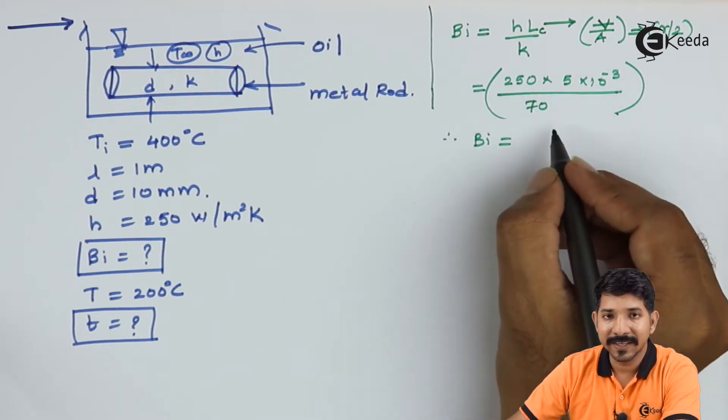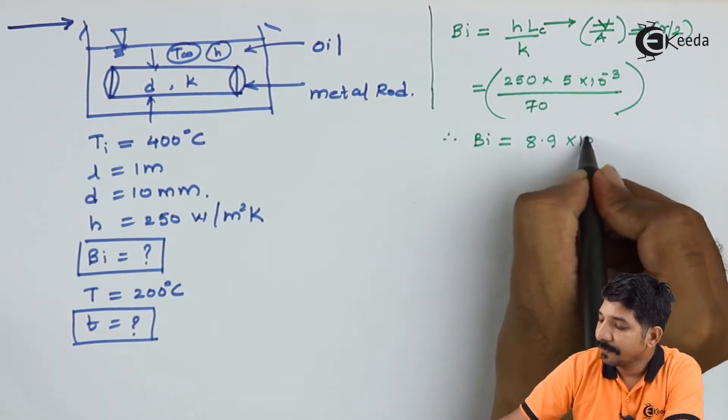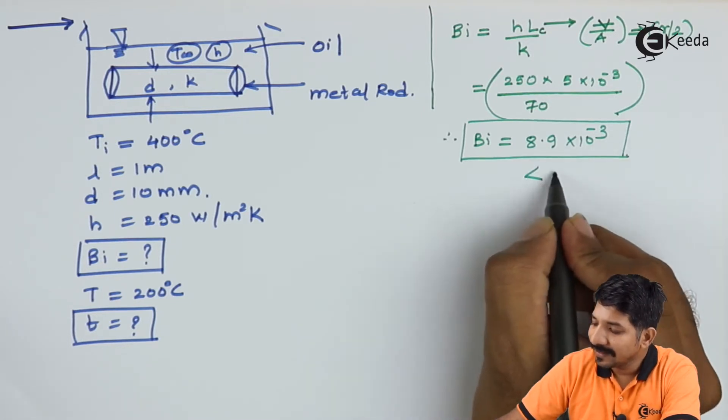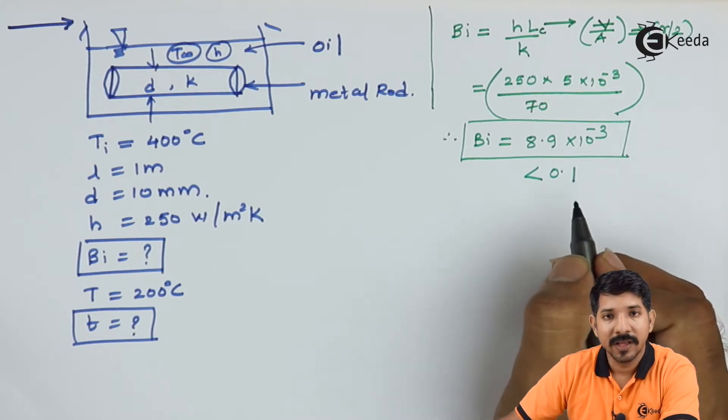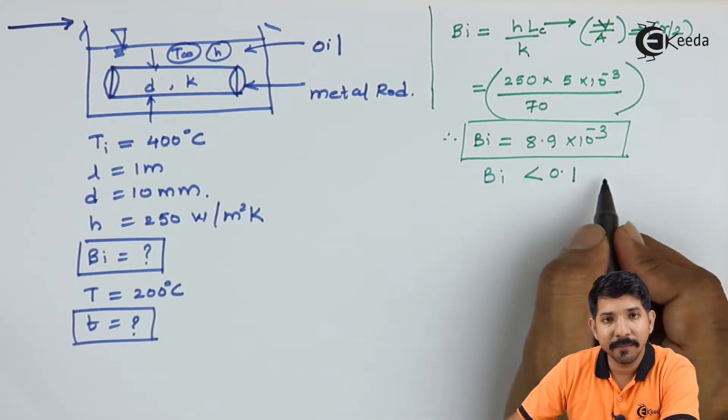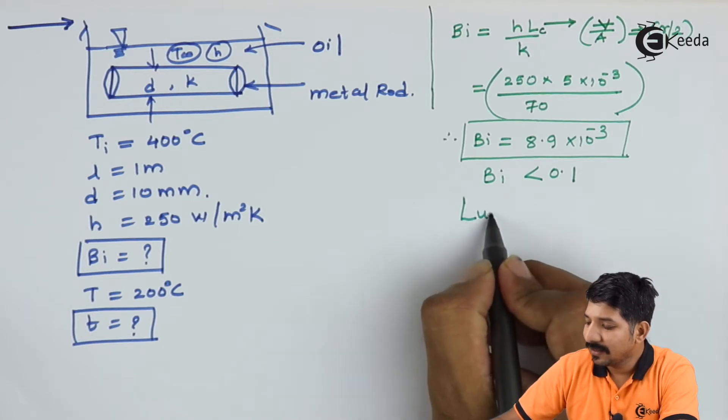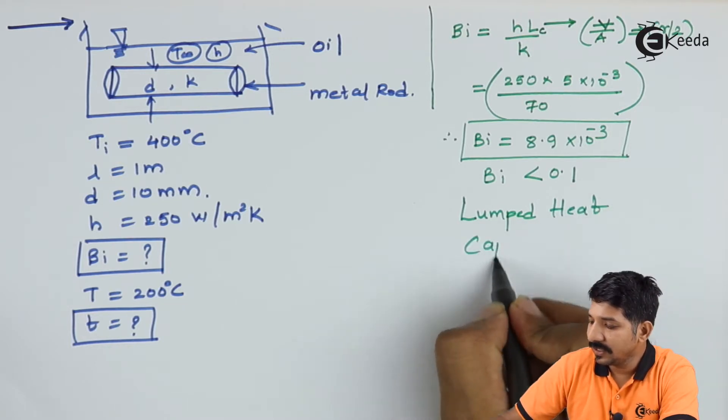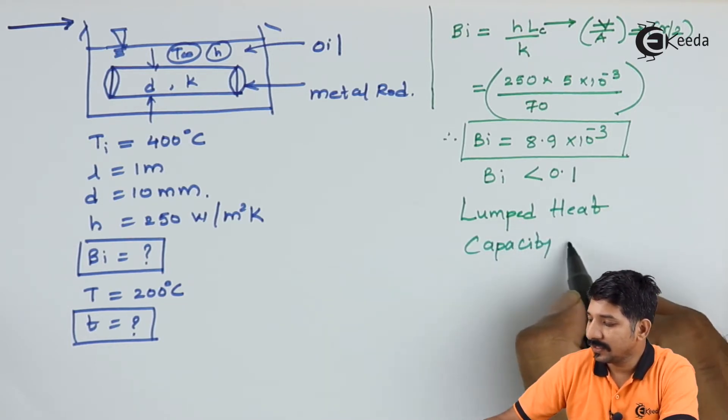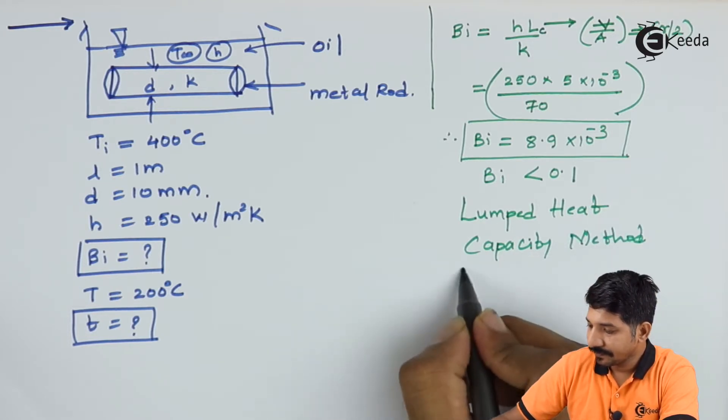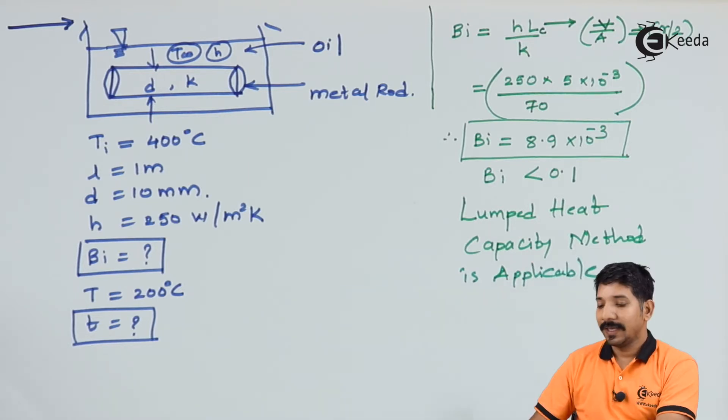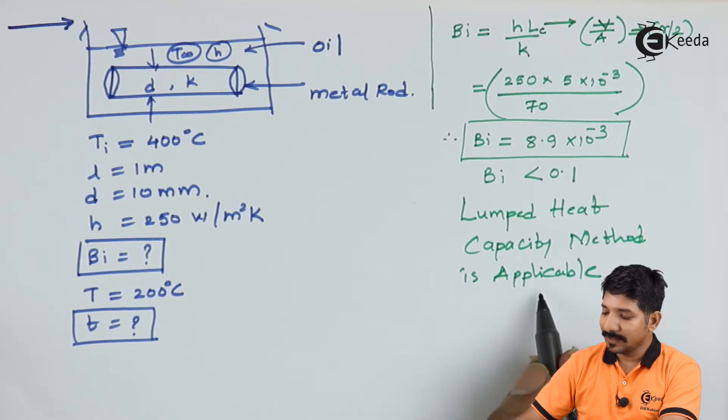The thermal conductivity that they are given is 70. So if I solve this, the Biot number that we are getting is 8.9 into 10 raised to minus 3. This is obviously less than 0.1. As the Biot number is less than 0.1, we can say that the lumped heat capacity method is applicable.